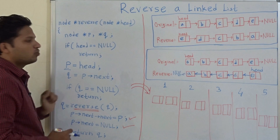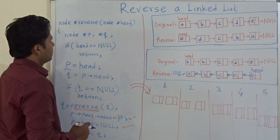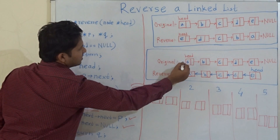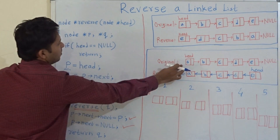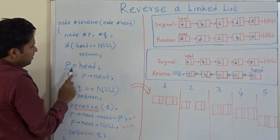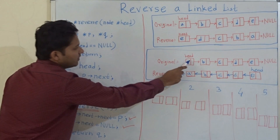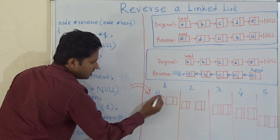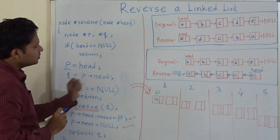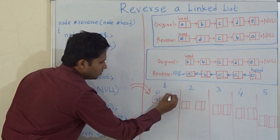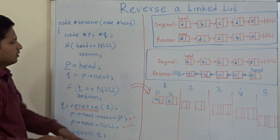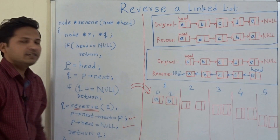So now I will explain this code. In this code we are passing the head. Consider this original linked list — so we have passed head here. If head is equal to null, then we stop; but head is not null. P is set equal to head, so P will point to A. And Q will point to P's next, so Q will point to the next node, that is B. So now P is pointing to A and Q is pointing to B.